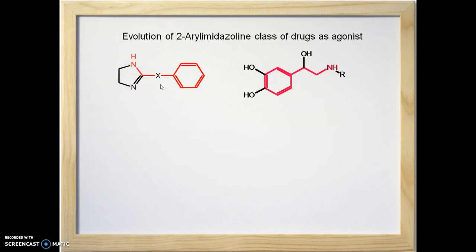Is there any similarity between phenylethanolamines and aryl imidazolines? Yes, there is one similarity. When you look at the structure of phenylethanolamines, you will find that they have the basic skeleton of beta-phenylethylamine: an amino group, alpha carbon, beta carbon, with the beta carbon bonded to a phenyl ring — so it is beta-phenylethylamine.